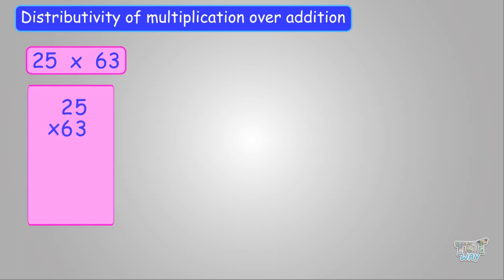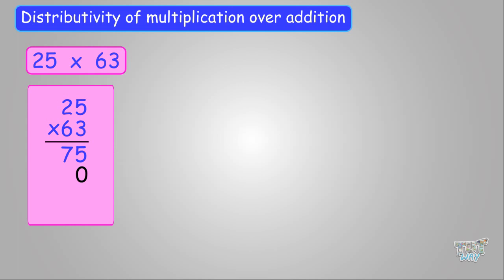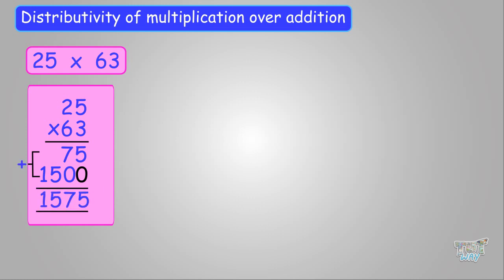Here we have a simple multiplication problem. We have to multiply 25 with 63. We will write the two numbers one below the other. We will first multiply 3 with 25 and we will get 75. Now we will put a zero below the product at the ones place, and then we will multiply 6 with 25 and write the product down here. We get 150. Now we will add the two products to get 1575.